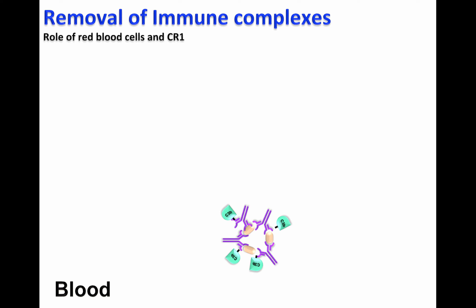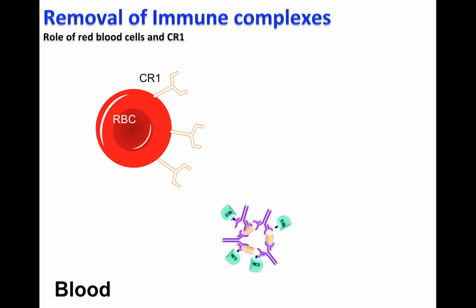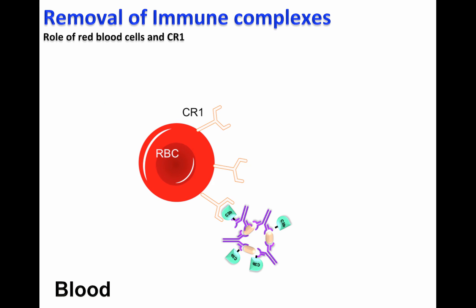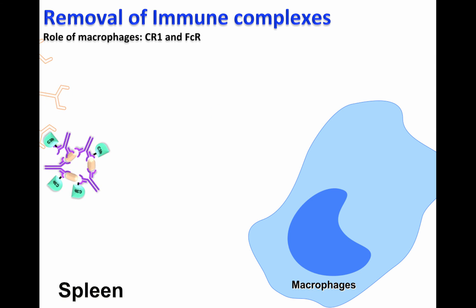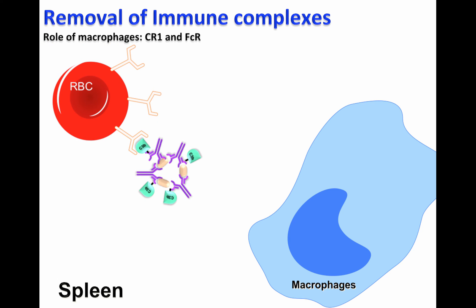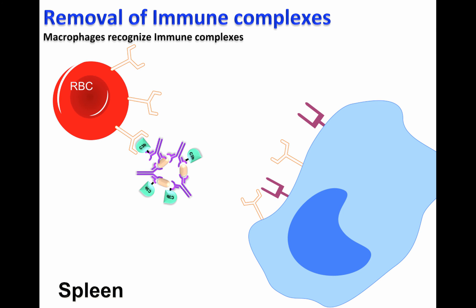Another mechanism by which immune complex accumulation is regulated involves red blood cells and macrophages. Red blood cells possess CR1 on the cell surface, or complement receptor 1, that recognizes C3B on immune complexes. This C3B-immune complex will be transported to the spleen. Here in the spleen, macrophages, which also express CR1, complement receptor 1, on the surface, plus Fc receptor, will be able to recognize the immune complexes.